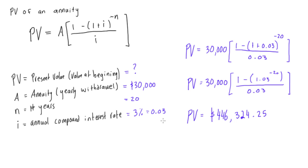So this basically means that by the day you retire, if you have $446,324.25, then for the next 20 years you'll be able to withdraw $30,000 at the end of the year. And at the end of this, on your last withdrawal, you'll have $0.